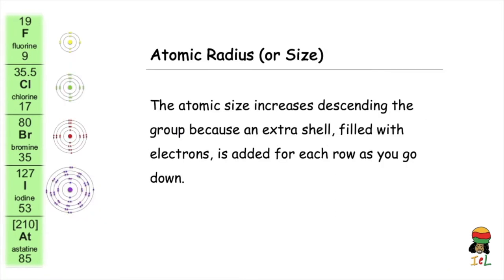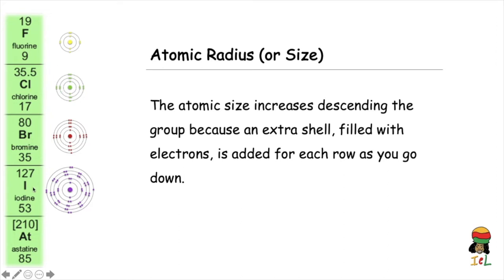The second trend for discussion is the atomic radius or size. Looking at the atomic diagrams for the first four elements of Group 7, we notice that the last shell contains seven electrons. However, there is an extra shell filled with electrons added to each atom going down the group, because each atom is in a different period. Fluorine is in Period 2 so it has two shells; chlorine has three shells because it's in Period 3; bromine in Period 4 has four shells, and so on.